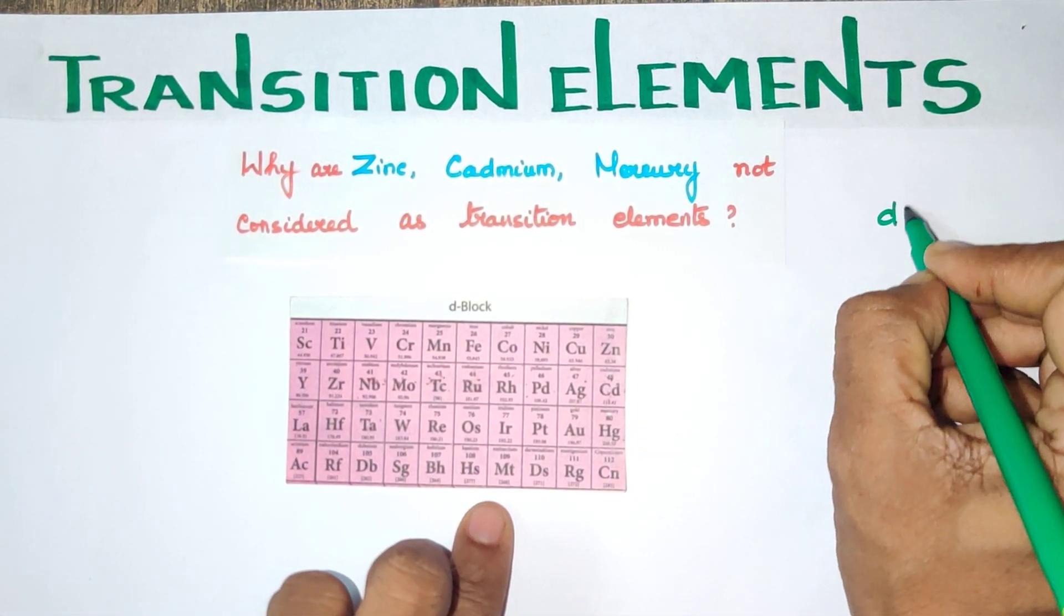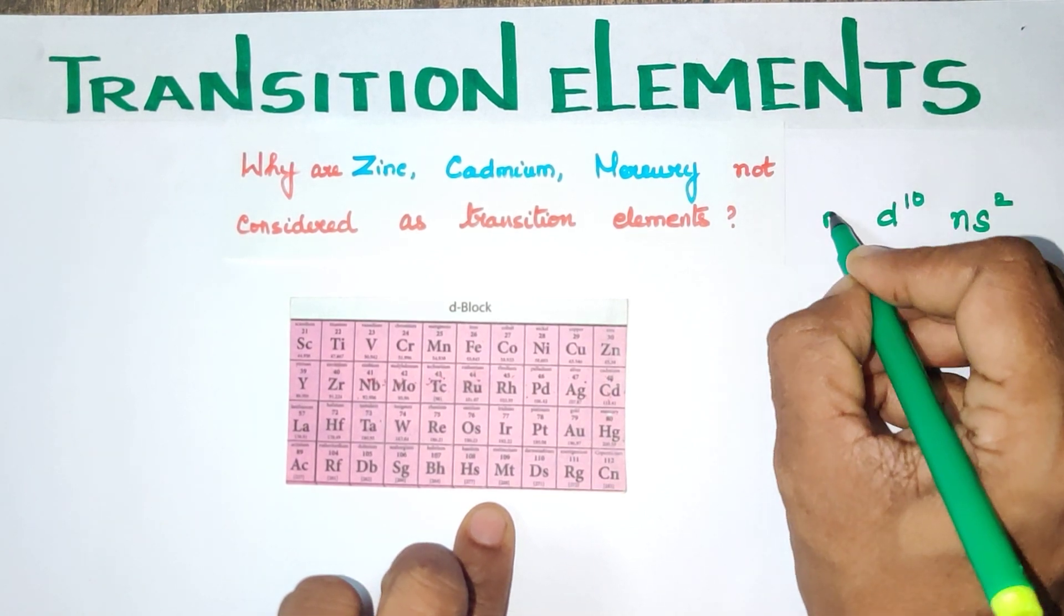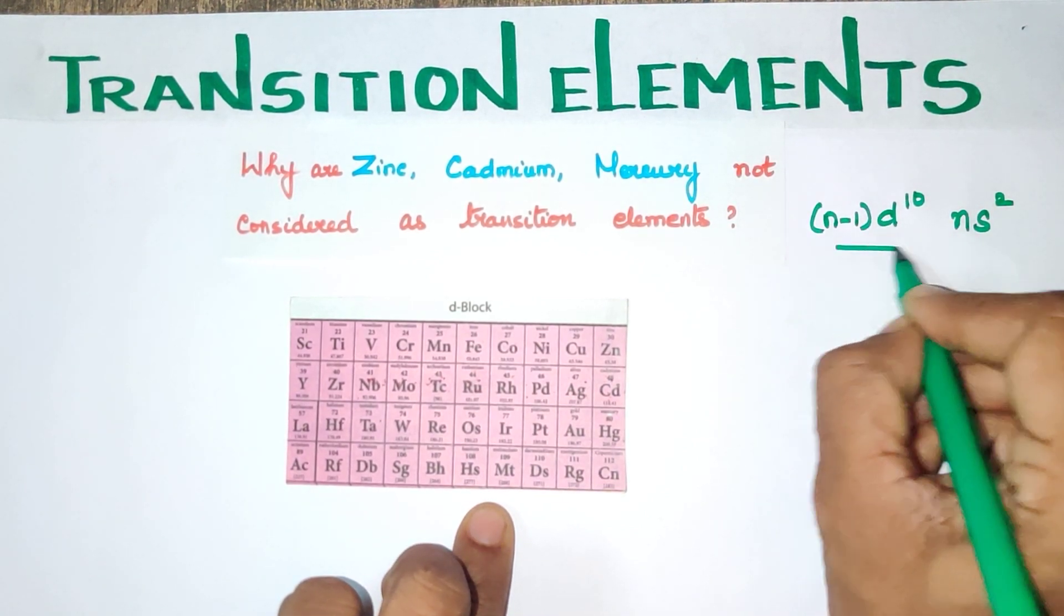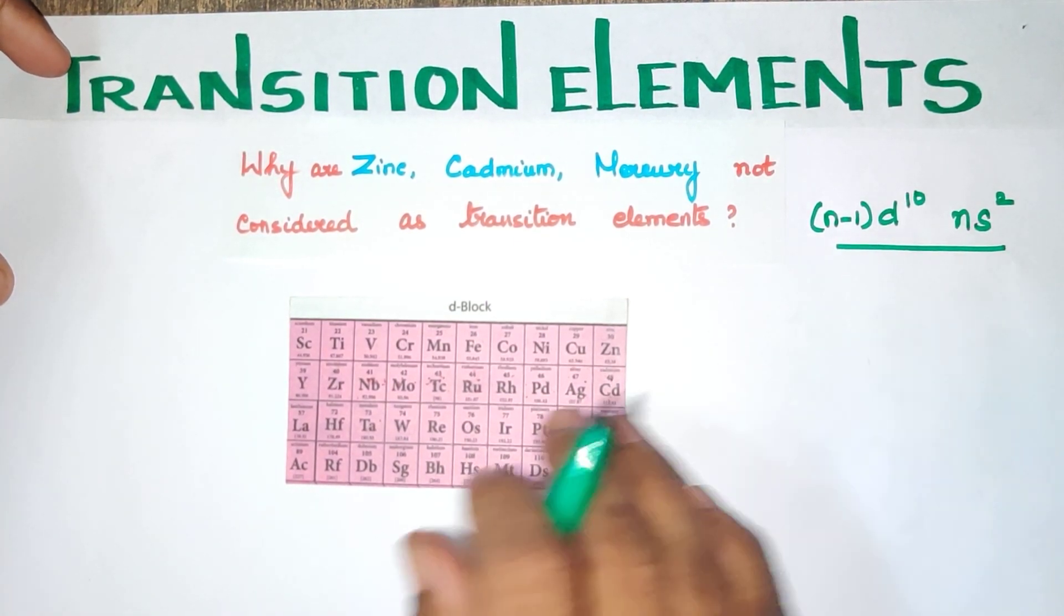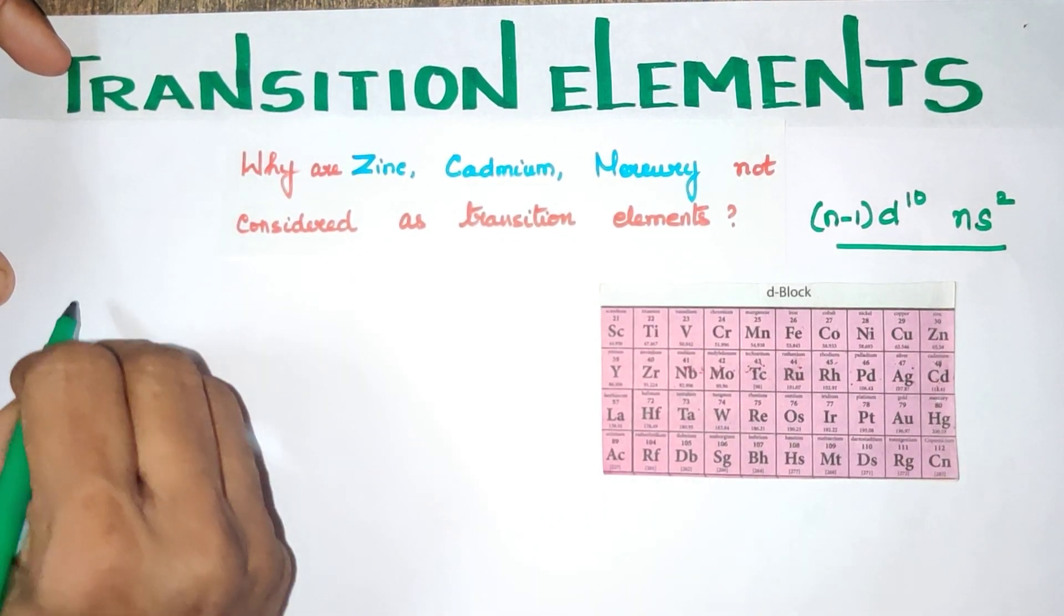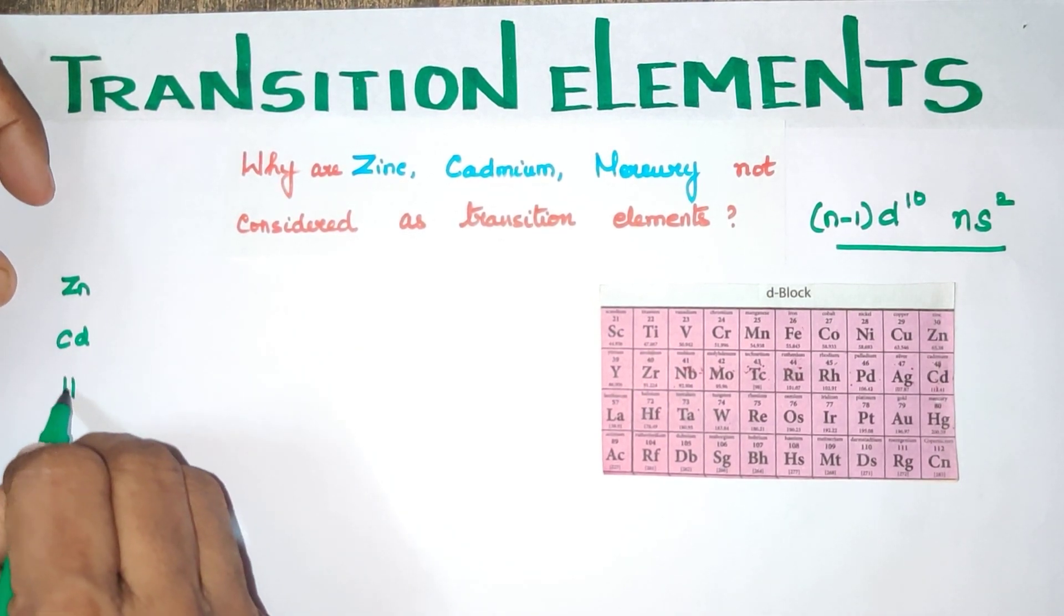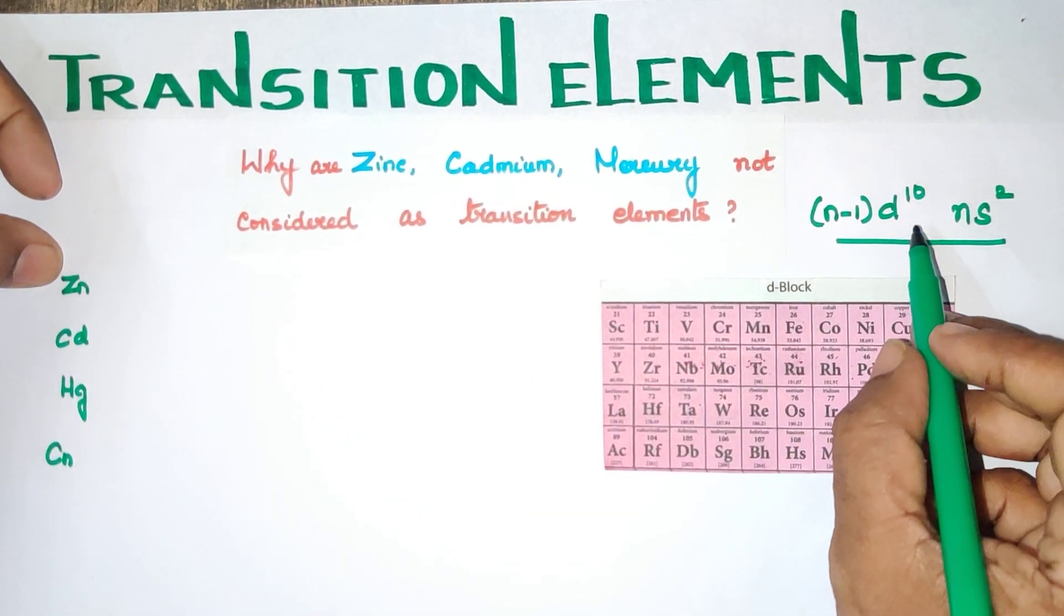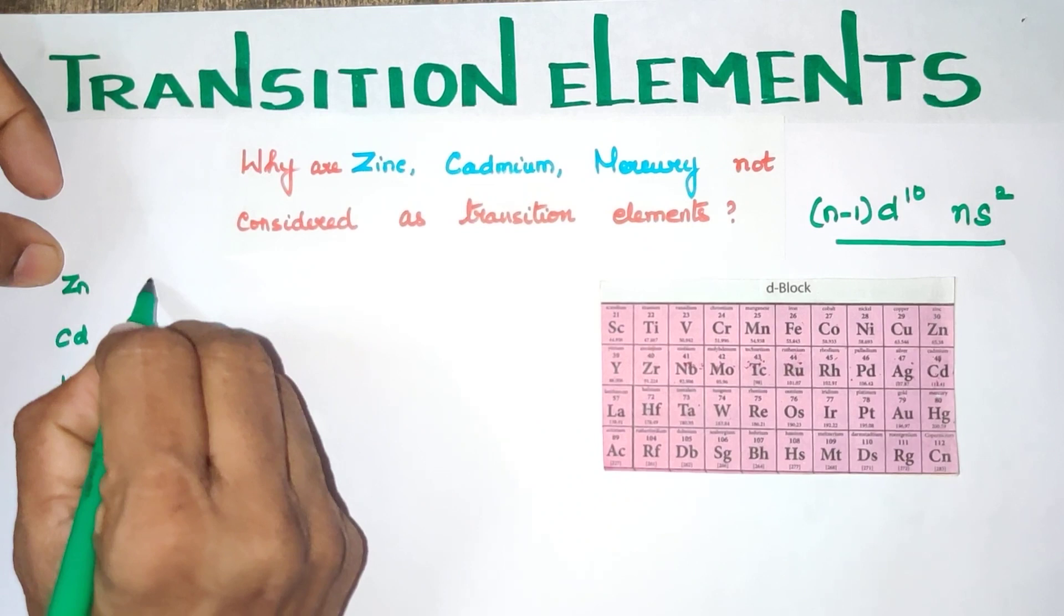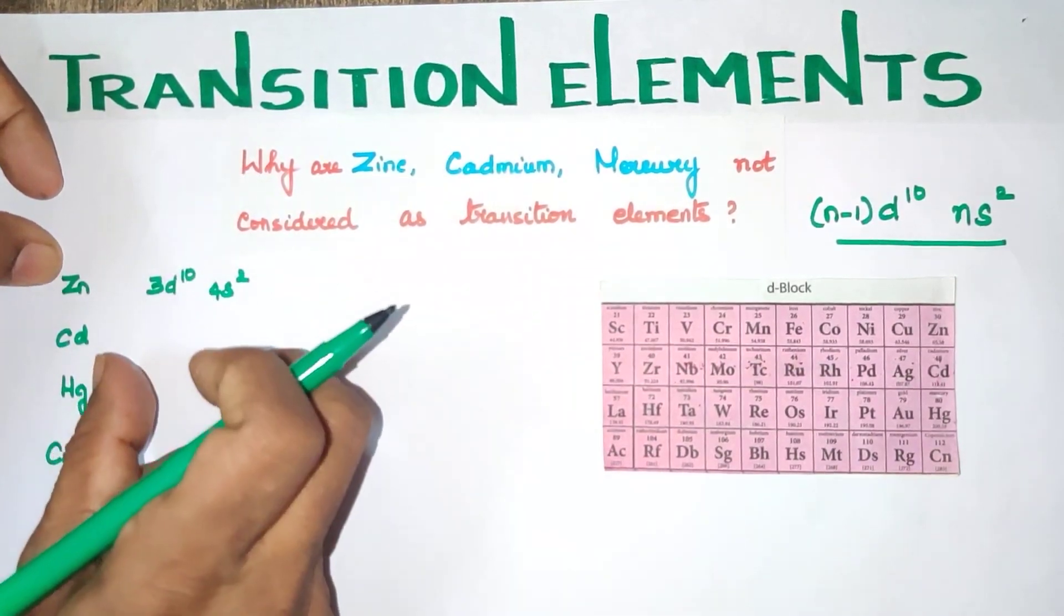Note D10 is complete. NS2, N-1, D10. This is the Outermost Electronic Configuration. Zinc, Cadmium, Mercury. I will use copper in this video. So all of these have D10 Electronic Configuration. Note 3D10, 4S2. The Outermost Configuration is complete.